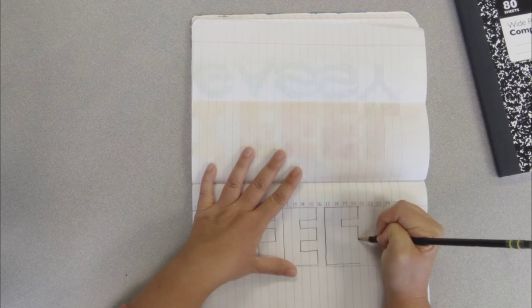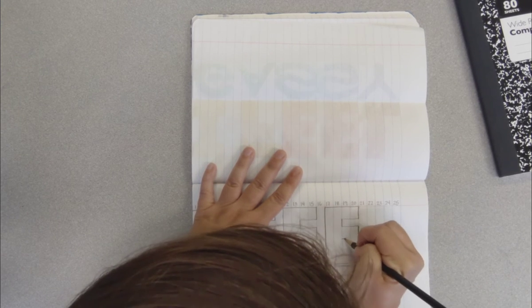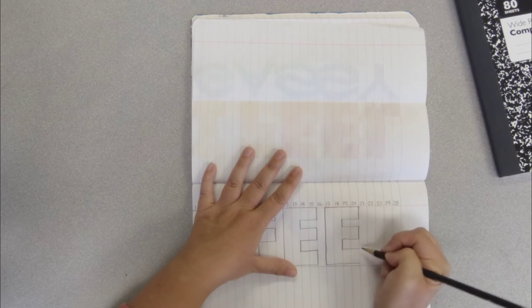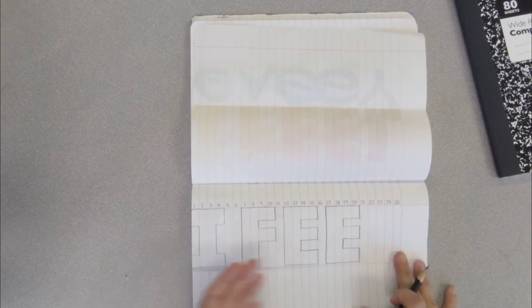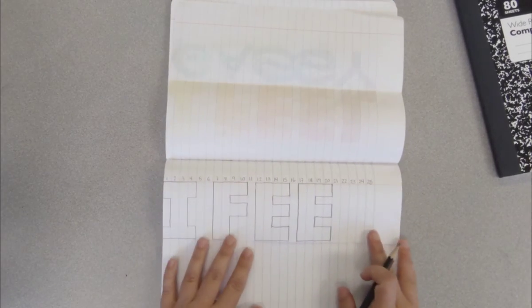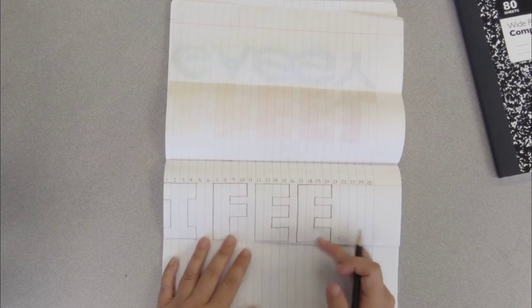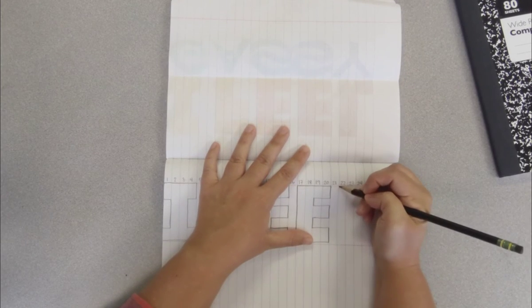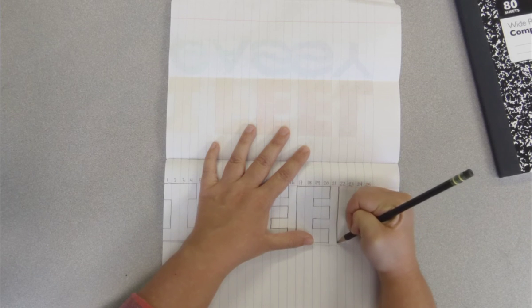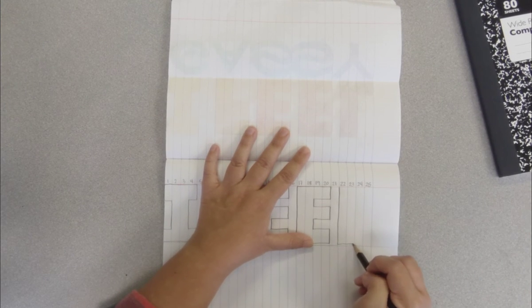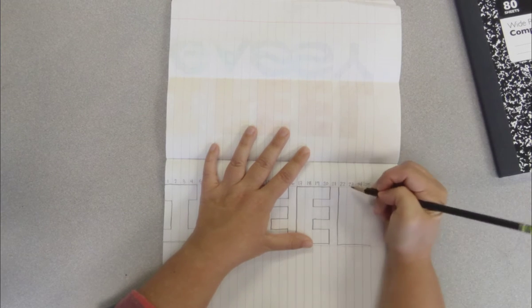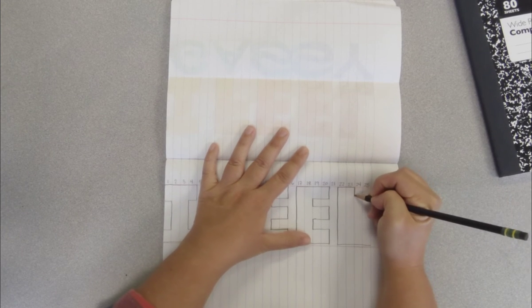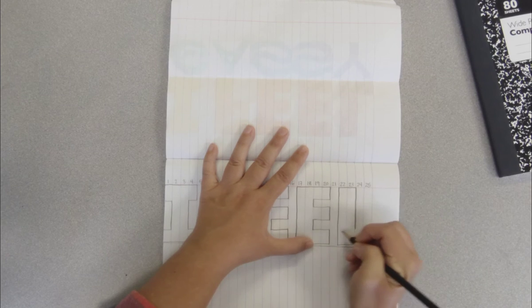You can definitely use a ruler for this if you want to, but what's nice about doing this on lined paper is a lot of that work is already done for us. We have these lines as our guides. So now we have I, F, E, E. We just need one more letter, our L. And there you have it, I feel.